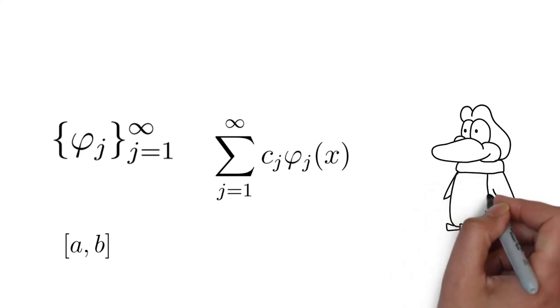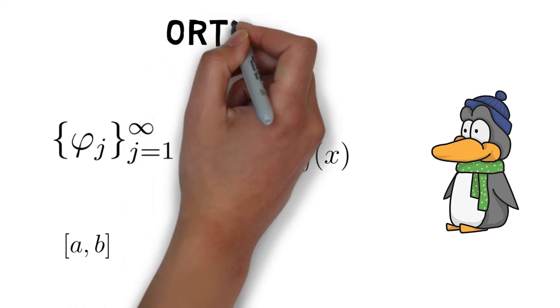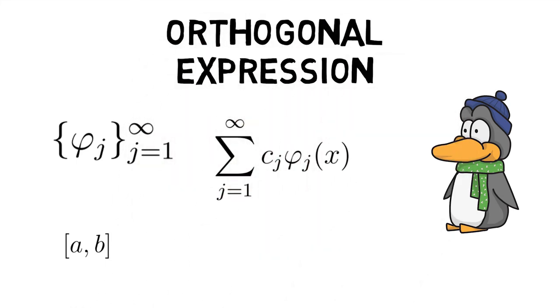One main consideration is whether a given function f on closed interval [a, b] has an infinite orthogonal expansion, that is f(x) equals the summation of cⱼψⱼ(x) from j=1 to infinity for some constants cⱼ, which leads to Fourier transformation.